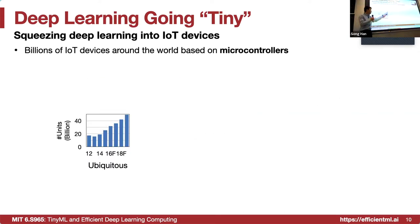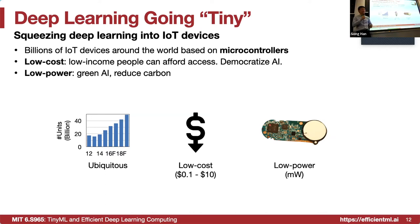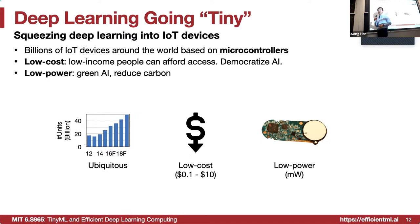These devices are quite ubiquitous — billions, tens of billions of units every year — and growing pretty fast. They are super cheap, super low cost, and also low power. They can be powered by a battery very easily and last a long time in wearable devices, in factories, etc.